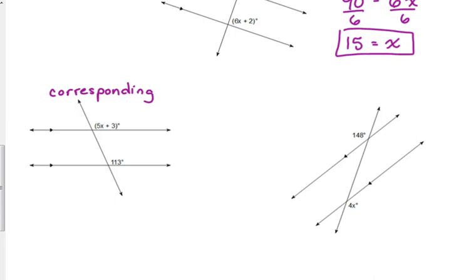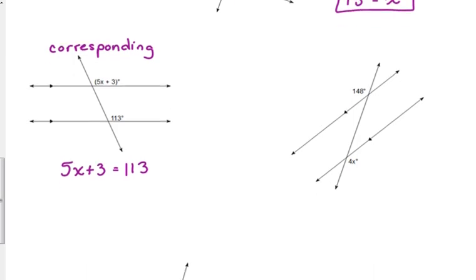Let me write that just so that you have that to reference. Corresponding congruent. Okay. So, these are also equal to each other. 5x plus 3 is equal to 113. So, we subtract 3 from both sides. 5x is equal to 110. And so, x is equal to 22. 22 nickels and a dollar and 10 cents. Just if you want to think about it that way.